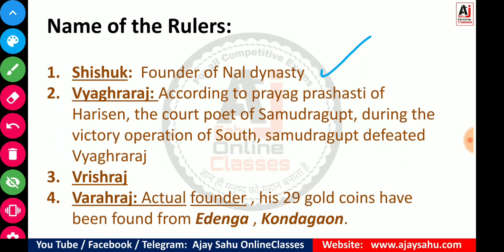The second ruler is Vyagra Raj, who is very important. According to the Prayag Prashasti of Harisena — the court poet of Samudragupta — during Samudragupta's victory operation of the south (Dakshin Vijay Abhiyan), Samudragupta defeated Vyagra Raj. We already read about this in the Vakatak and Gupta dynasty chapters. So from the Prayag Prashasti of Harisena, we know Samudragupta defeated Vyagra Raj.